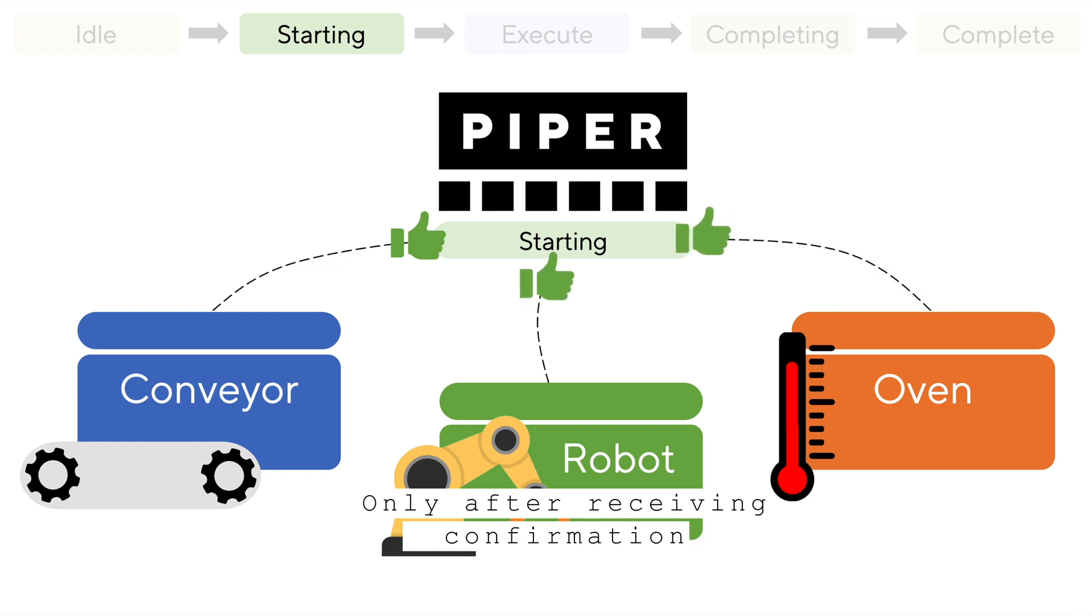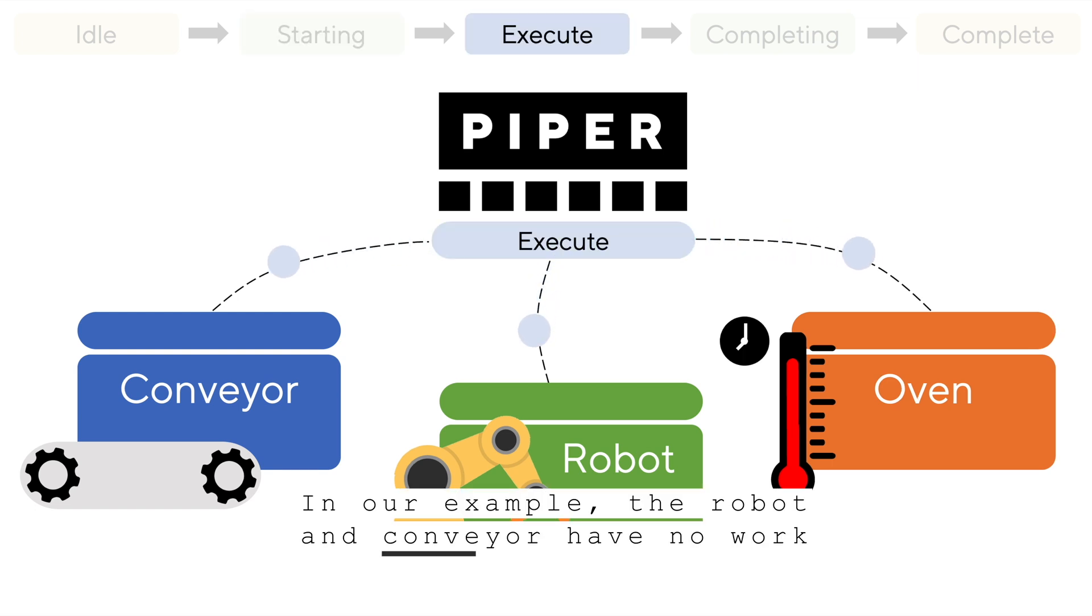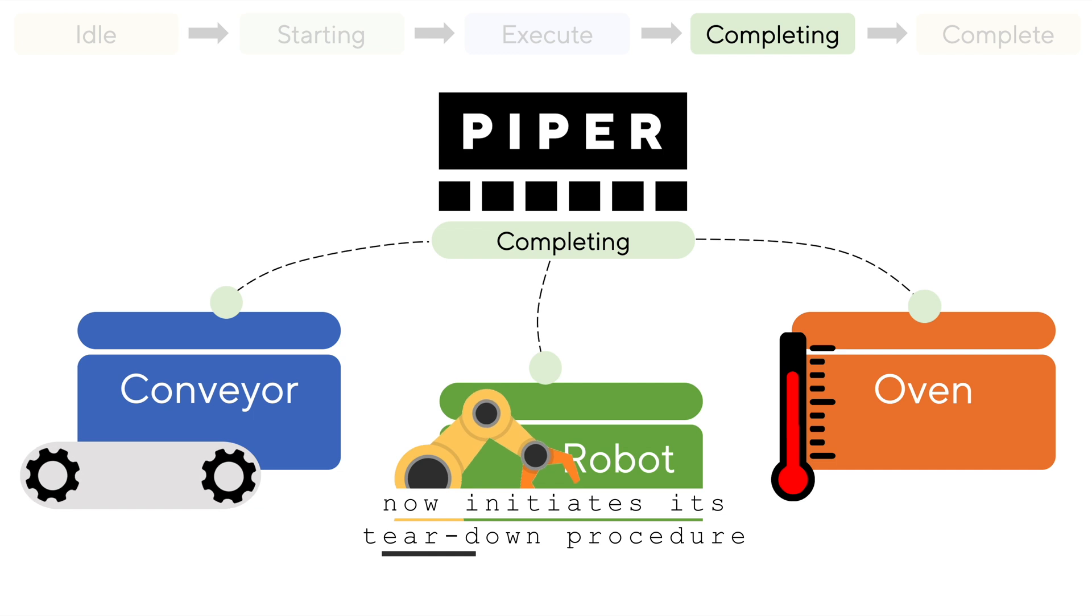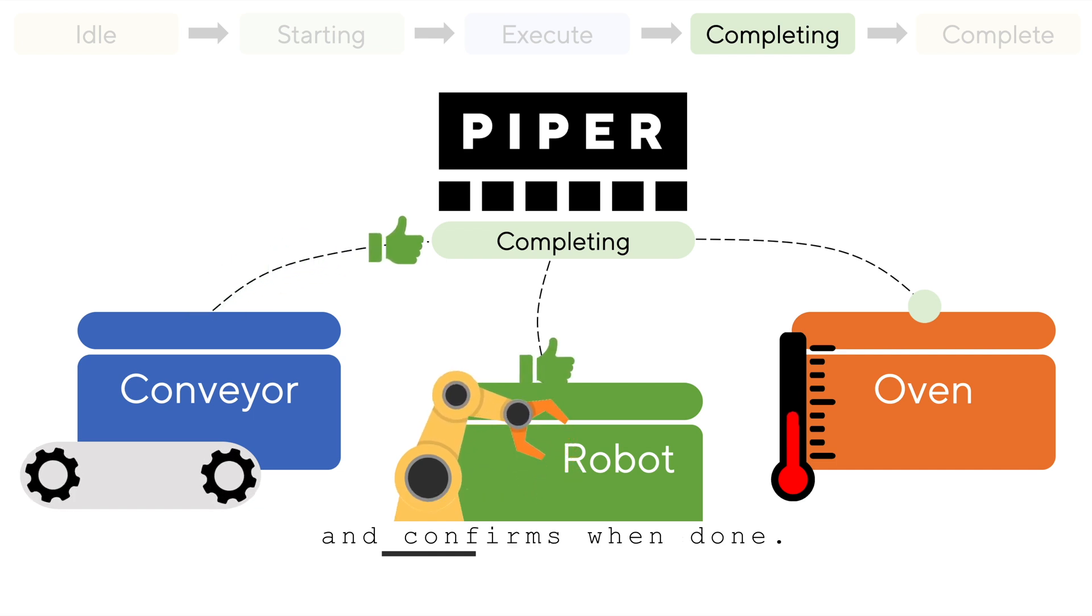Only after receiving confirmation that all registered components are done, will Piper transition to the execute state. In our example, the robot and conveyor have no work to do here, so they respond with done immediately. The oven remains at temperature until the curing is done, and only after receiving its done response does Piper transition to the completing state. Each component on the machine now initiates its teardown procedure and confirms when done. Piper then transitions to the completing state.